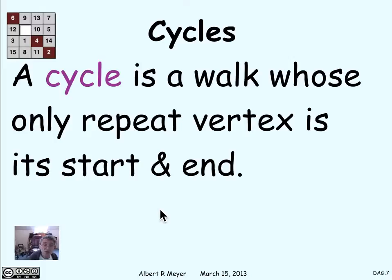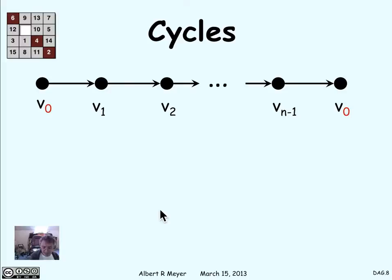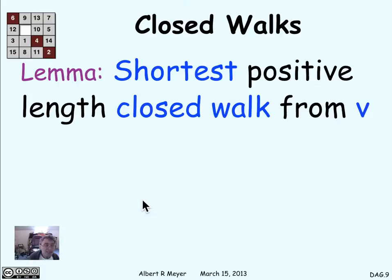A special case of a closed walk is a cycle. A cycle is a walk whose only repeat vertex is its start and end. A single vertex all by itself is a length-0 cycle, so you're never going to be able to get rid of length-0 cycles, because they're the same as vertices. But positive length cycles, you can hope to ensure, are not there. To represent a cycle as a path, you show the sequence of vertices v0, v1, v2, where all of the vertices from v0 up to v(n-1) are different — that's what makes it a cycle — except that the last vertex v0 is a repeat of the first one. That one repeat is allowed, and it's natural to draw it in a circle.